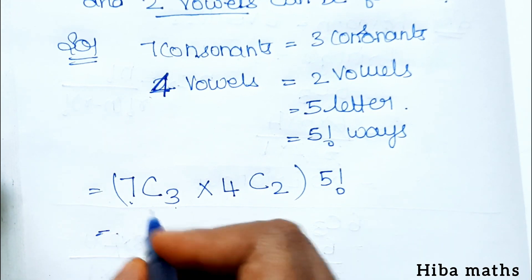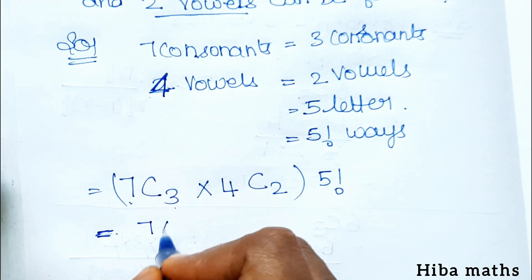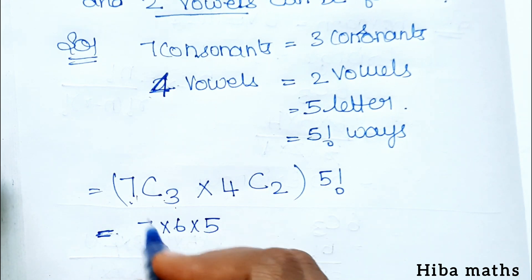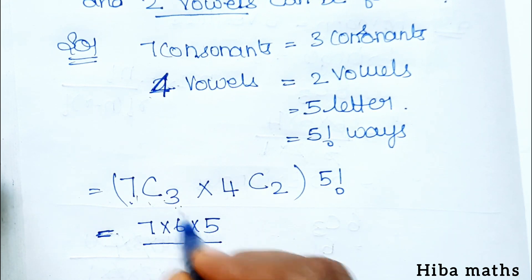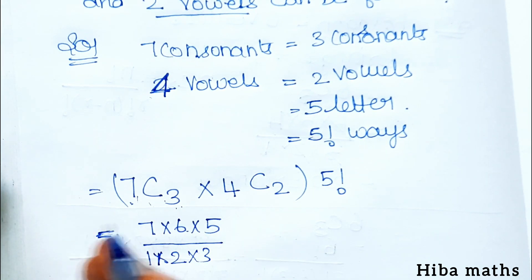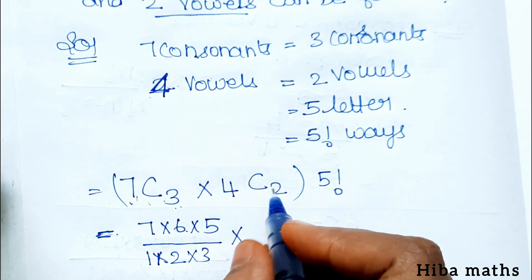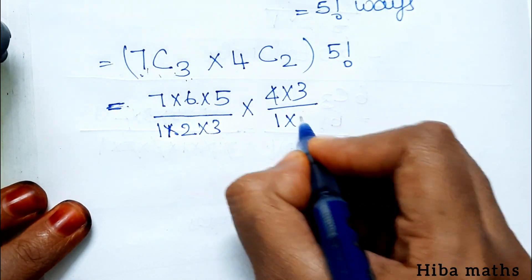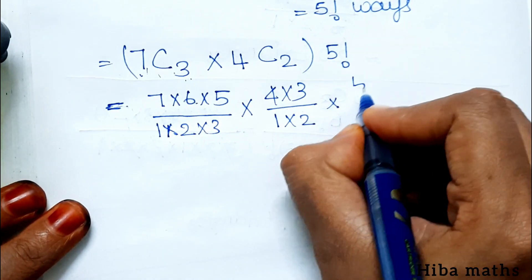Now we expand 7C3: 7 into 6 into 5 divided by 1 into 2 into 3. And 4C2: 4 into 3 divided by 1 into 2, into 5 factorial which is 5 into 4 into 3 into 2 into 1.